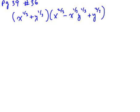When solving this problem, what we need to do is multiply the first term, x to the one-third of the first parentheses, times every term in the second parentheses.